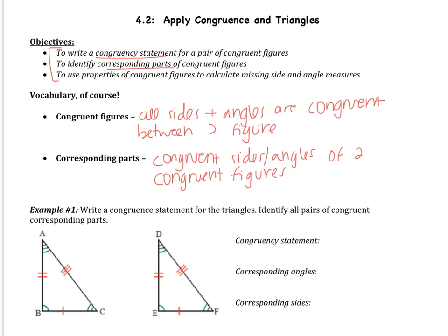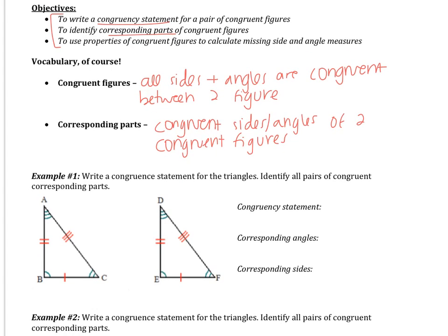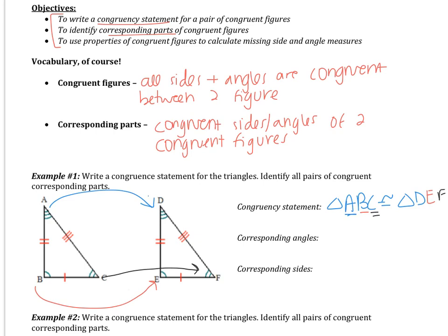Let's jump into example number one: write a congruency statement and identify all pairs of corresponding parts. A congruency statement looks like triangle ABC is congruent to triangle — and for the second triangle, the order is very important. Angle A matches up with angle D, angle B matches up with E, and C matches up with F. I know this from the tick marks — A and D both have three tick marks, so they are congruent. All sides and angles are marked congruent, which is why we can write this congruency statement.